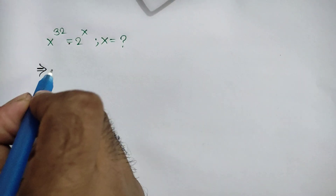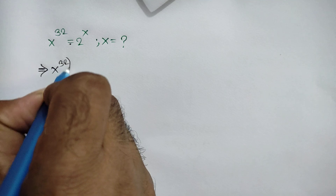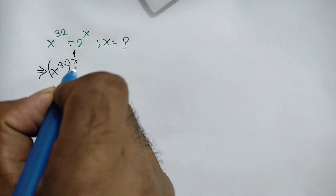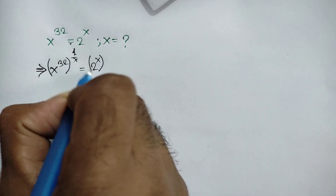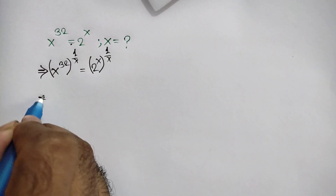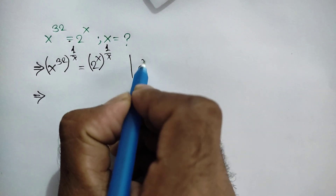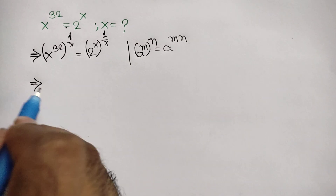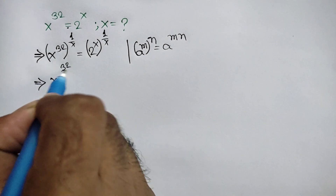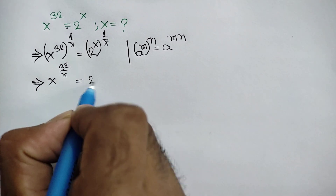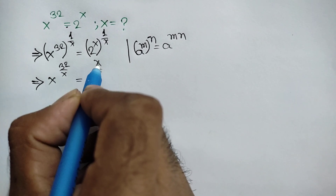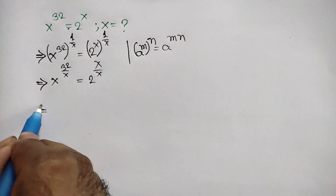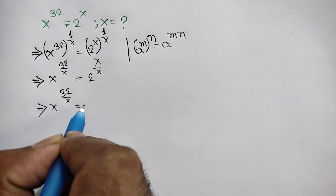Firstly, we are multiplying with power 1 over x. So we can write x to the power 32, whole to the power 1 over x, is equal to 2 to the power x, whole to the power 1 over x. We know that a to the power m, whole to the power n, is equal to a to the power mn. So we can write x to the power 32 over x is equal to 2 to the power x over x. This x cancels out this x, so it will remain 2. So we get x to the power 32 over x is equal to 2.